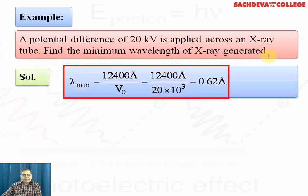Minimum wavelength, using shortcut formula, is 12,400 angstrom divided by V. So 12,400 divided by 20,000 because it is 20 kilovolts. The wavelength is calculated as 0.62 angstrom units.